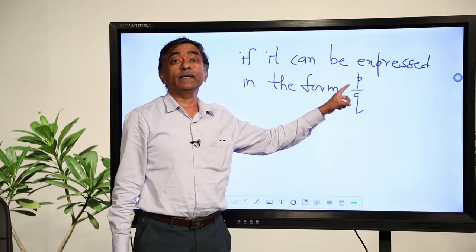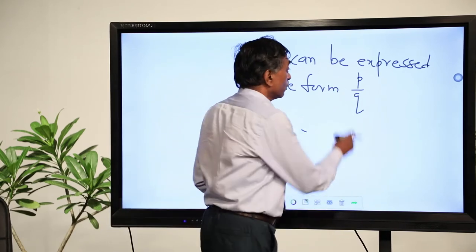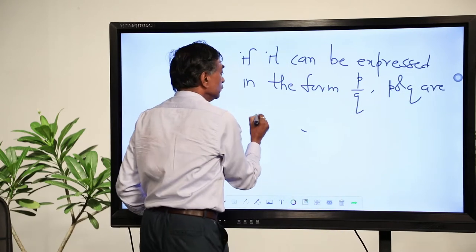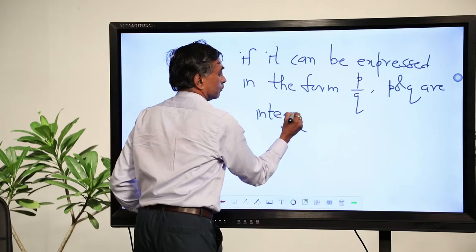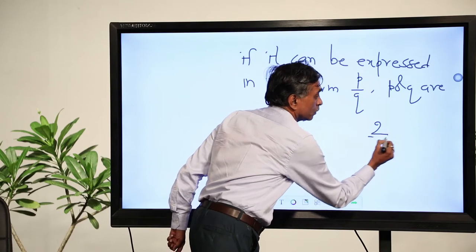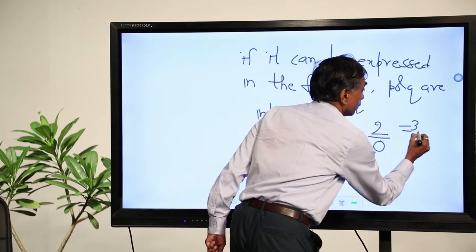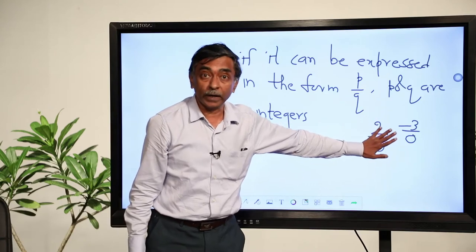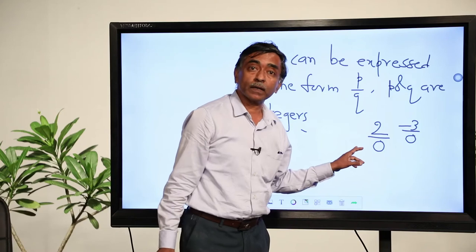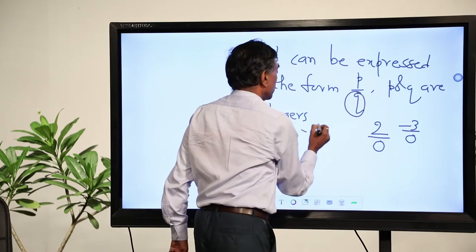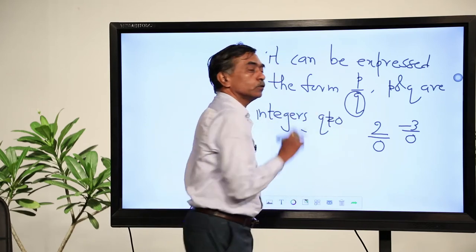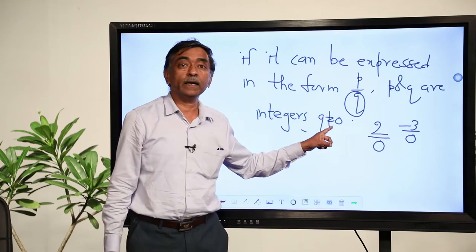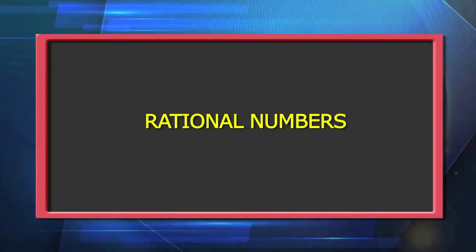Can we have a number like 2 by 0 or minus 3 by 0? No, because you get an undefined number. So these numbers will not work. The condition we put is: q is not equal to 0. So, p and q are integers, the number is of the form p by q, where p and q are integers and q is not equal to 0. Such a number is a rational number.